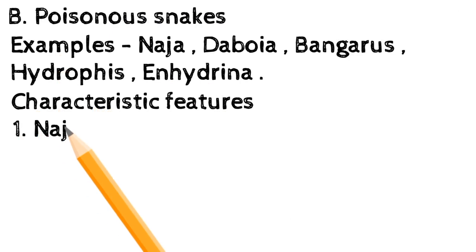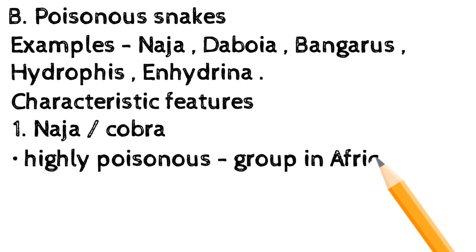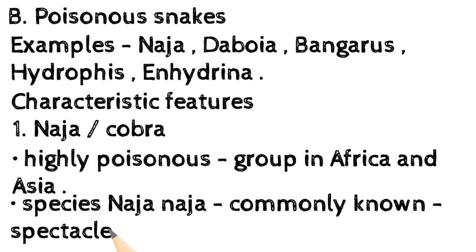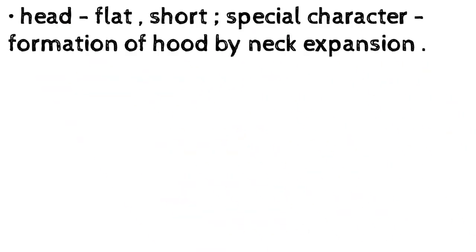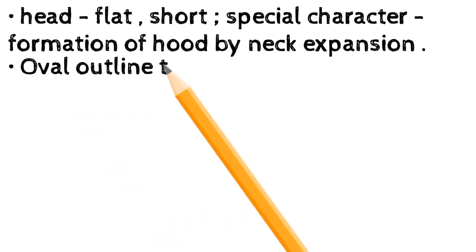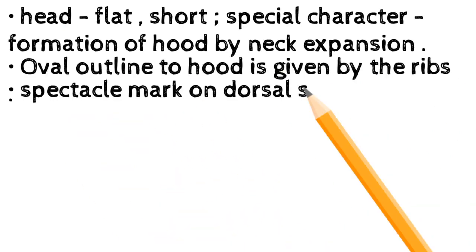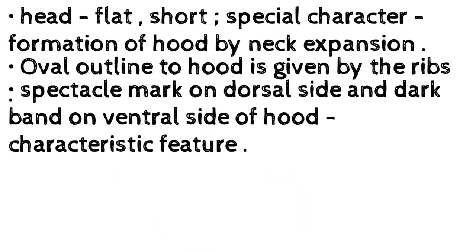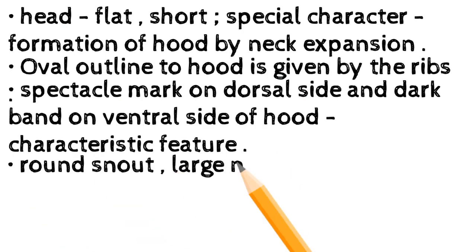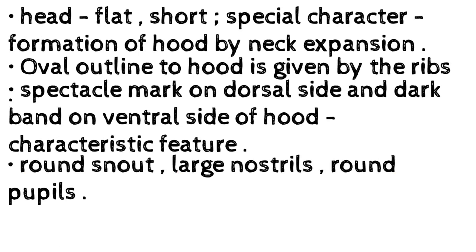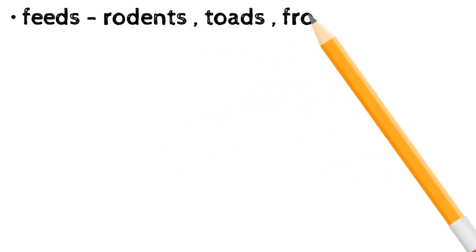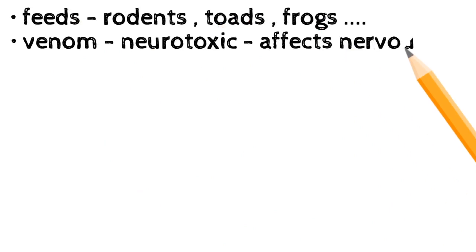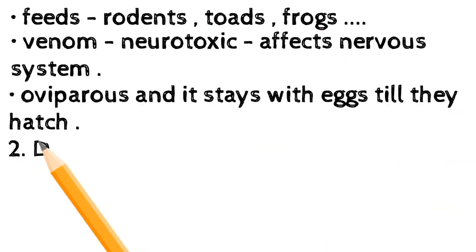Naja — the cobra — is a highly poisonous group found in Africa and Asia. The species Naja naja is commonly known as the spectacled cobra or binocellate cobra. Head flat and short. Special character: formation of a hood by neck expansion. Oval outline to the hood is given by the ribs. Spectacle mark on dorsal side and dark band on ventral side of the hood are characteristic features. Round snout, large nostrils, round pupils, swelling at the temporal region above the poison gland.